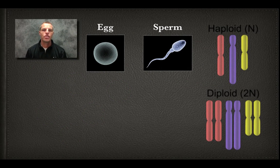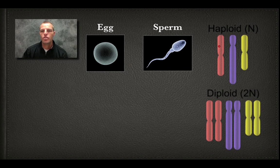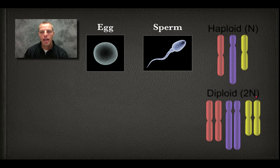If we look at haploid, you'll notice it just has one set of chromosomes — that's why we always mark it with just n — as opposed to diploid cells, which are going to have two n, or two sets of chromosomes.